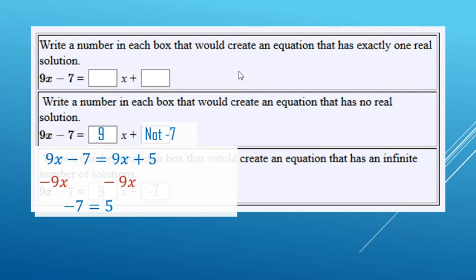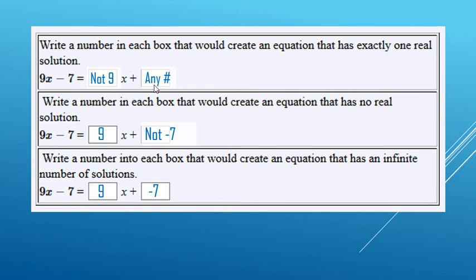So for one solution, you just have to make sure that the coefficient is different. So it can't be a 9. It can be a 10, 11, 12, 13. And then for your constant, it can be any number at all. It could be a negative 7, 11, 12, negative 100.